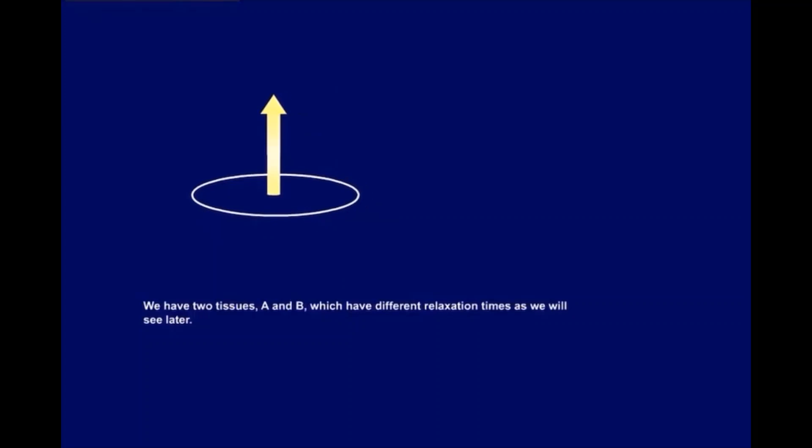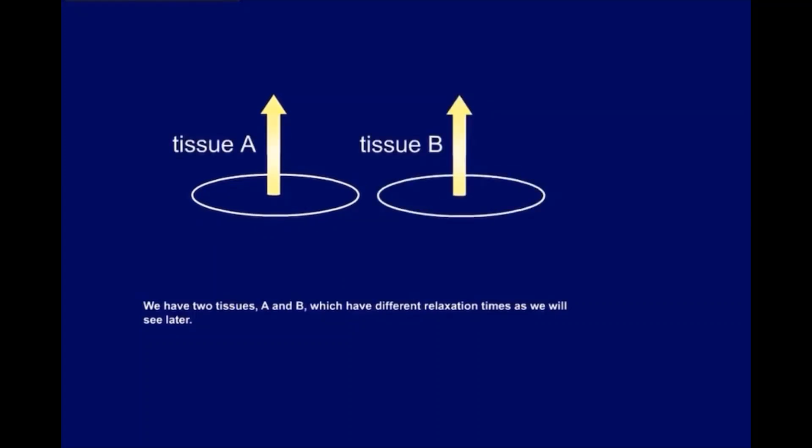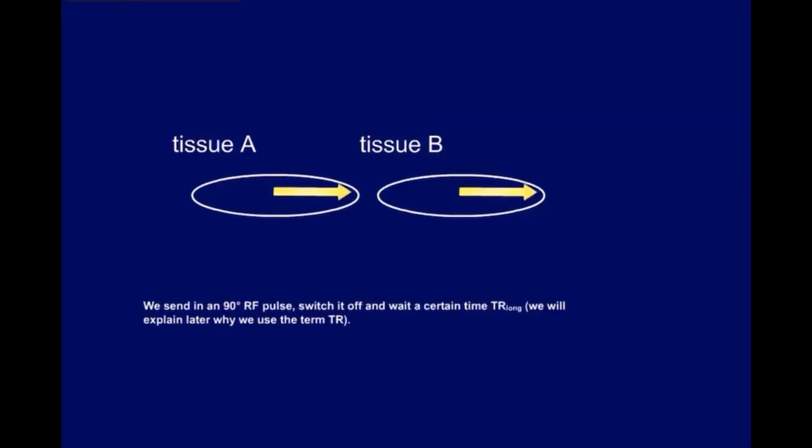We have two tissues, A and B, which have different relaxation times, as we will see later. We send in a 90 degree RF pulse, switch it off, and wait a certain time, TR long.